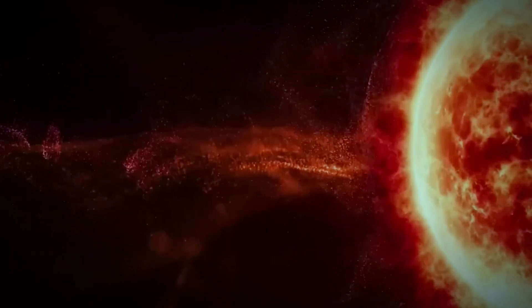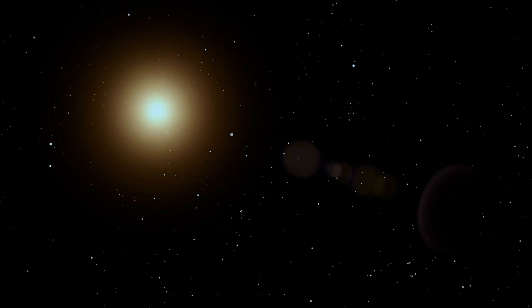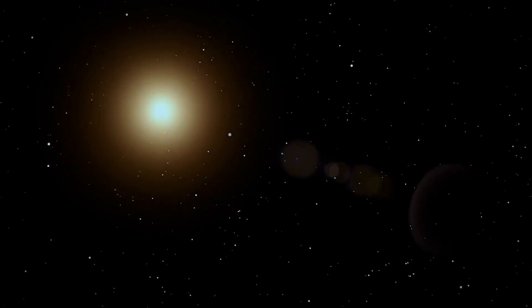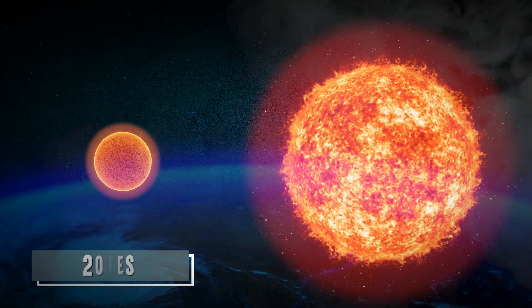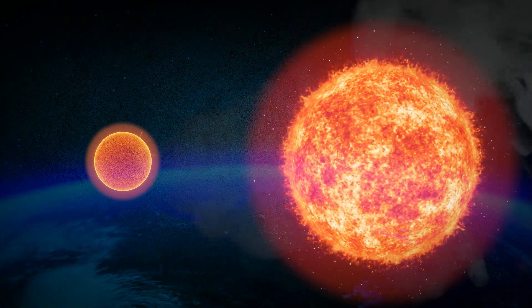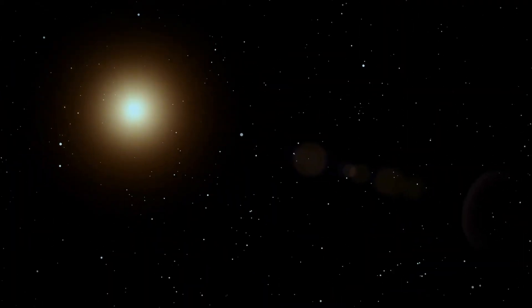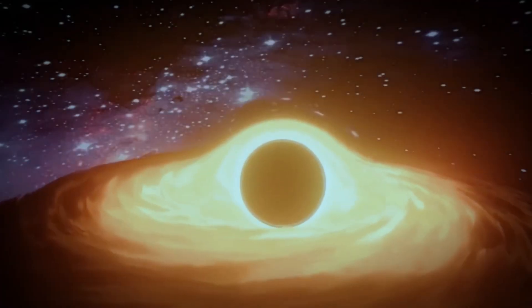Now, here's the plot twist that has astronomers buzzing. Could Betelgeuse's sudden dimming be a cosmic drumroll leading up to the grand finale? A supernova explosion. Betelgeuse, being 20 times the mass of our sun, was destined for a supernova finale. The dimming might be a sign that the star is running low on fuel and gearing up for a gravity-fueled collapse.